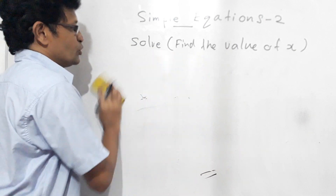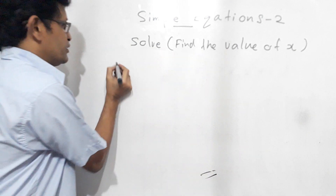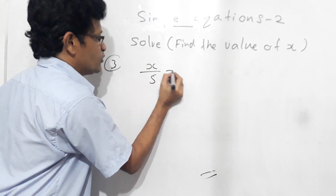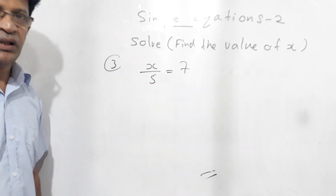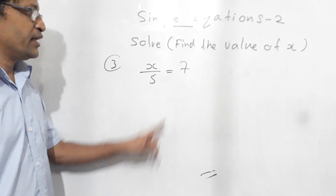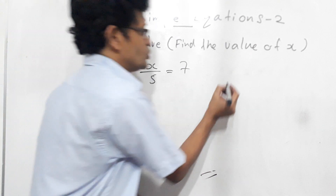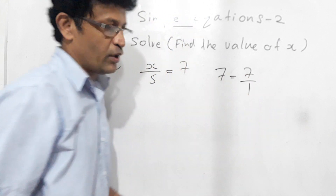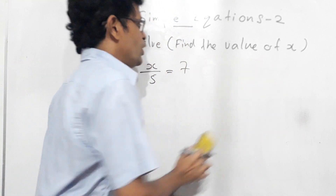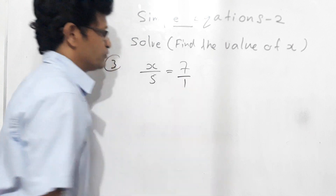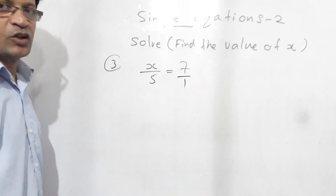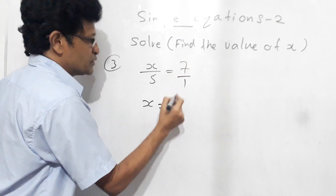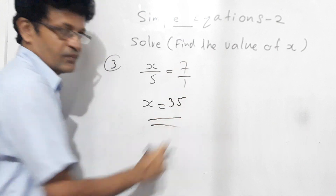Now we will do the third question: x over 5 equals 7. Can we do cross multiplication? Yes — because 7 is actually 7 over 1, so we write 1 here. Now cross multiply: 1 into x gives x, equals 5 times 7, which is 35. So x equals 35.